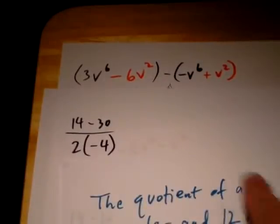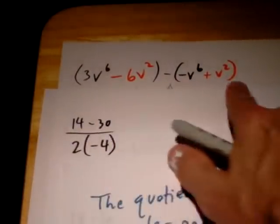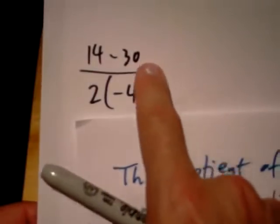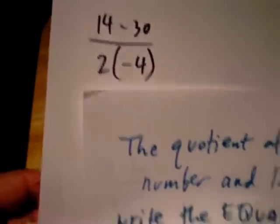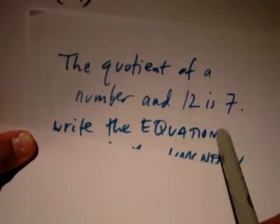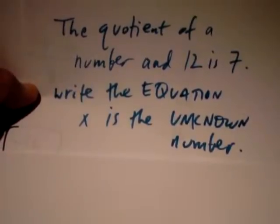I'm going to show you each one. So this one you're supposed to work with, and then this one here is like a fraction problem, right? And the final one is the quotient of a number and twelve is seven. Write the equation where x is the unknown number.